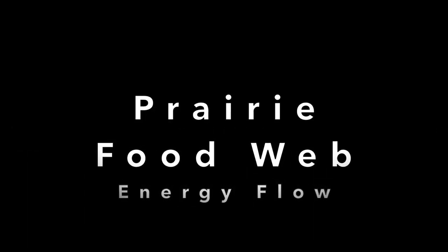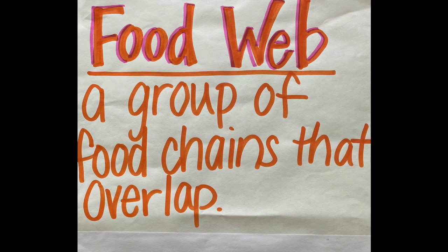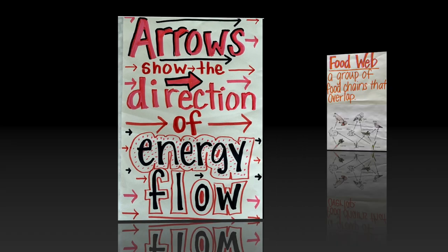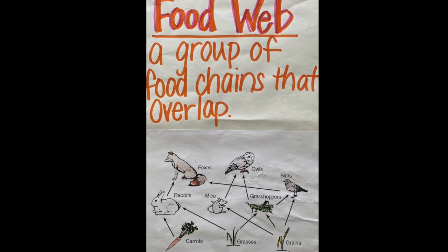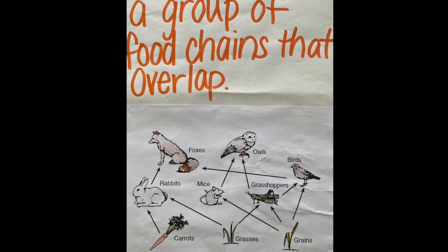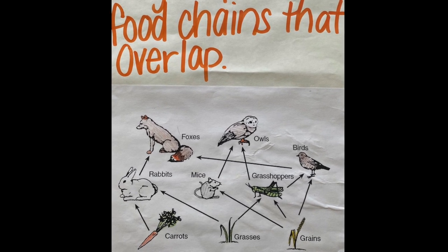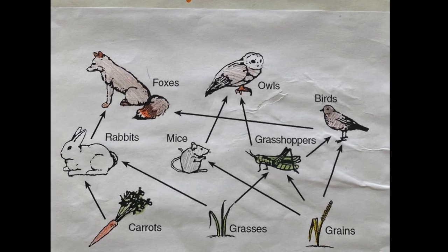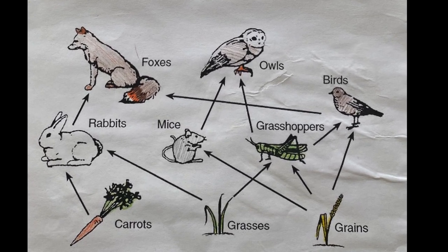We are going to look at the prairie food web energy flow. We already know that a food web is a group of food chains that overlap, and arrows show the direction of energy flow. Energy flow can be traced using arrows. I can see the energy going from a producer to a first level consumer, first level consumer to a second level consumer, second level consumer to a third level consumer, and so on.